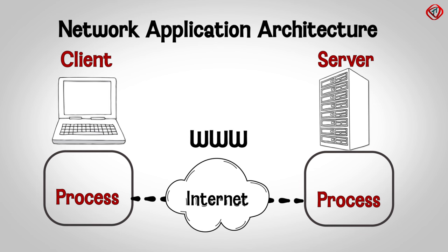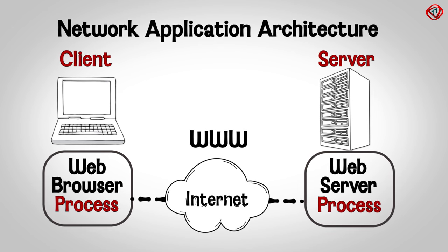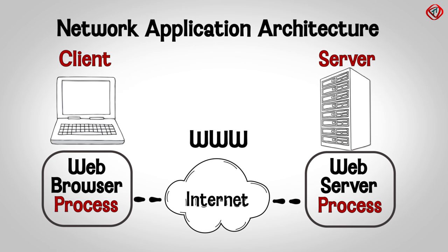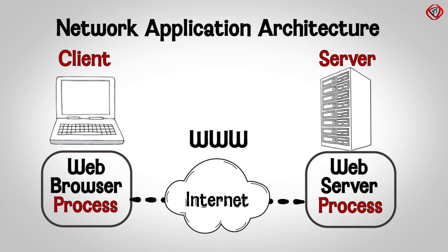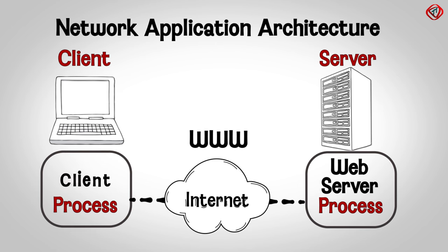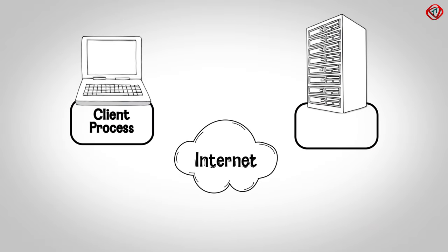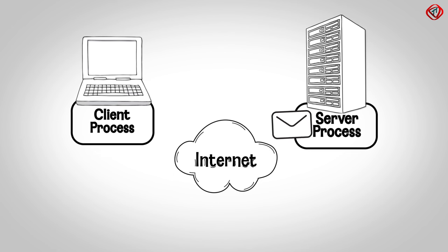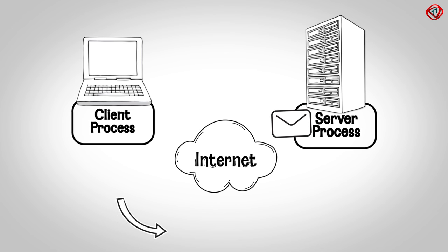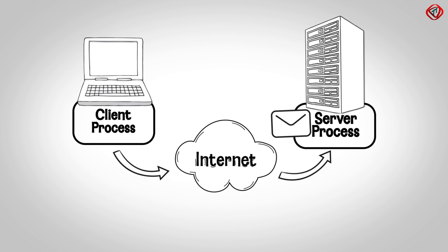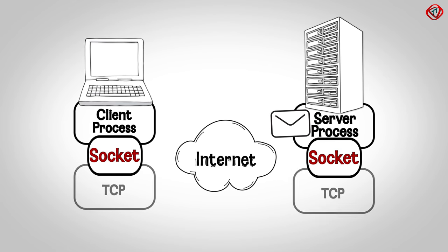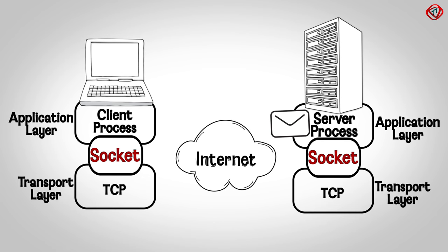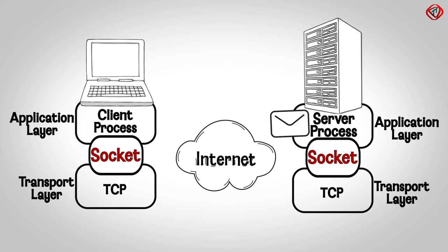In the network application World Wide Web, a web browser process in the client communicates with the web server process in the server. Therefore, a network application has a pair of processes running during communication. The process which initially contacts is called the client process, and the process which is contacted is called the server process. A client process sends a request message to the server process, and this message moves through the network to reach the server process. All messages move through a software interface called a socket, which exists between the application layer and the transport layer.